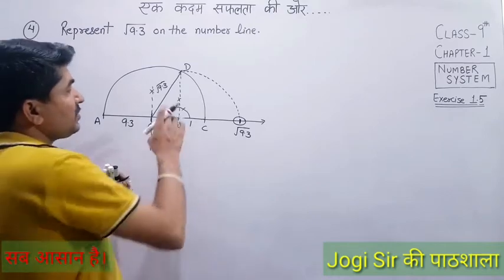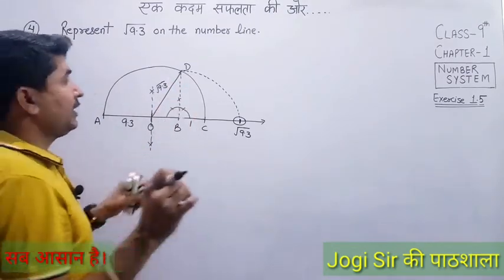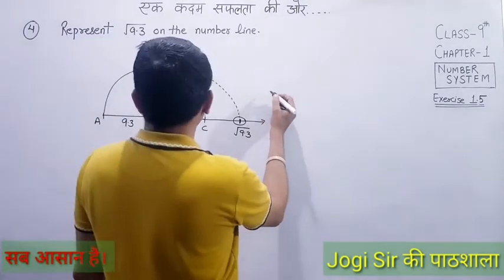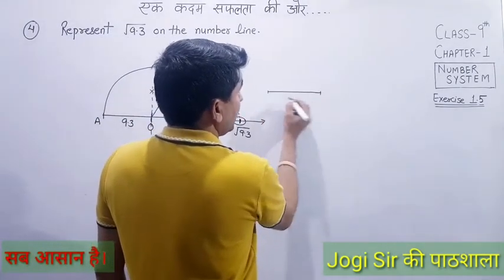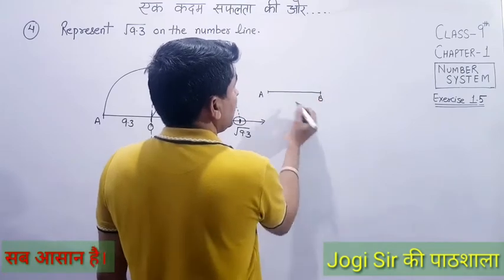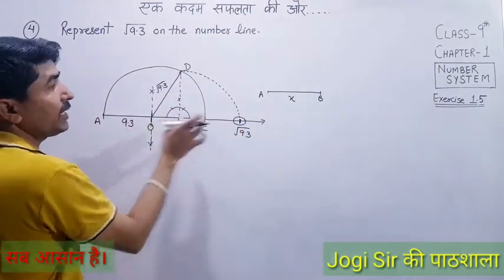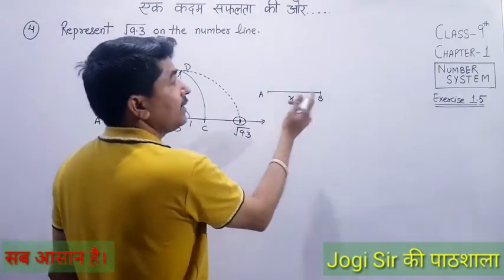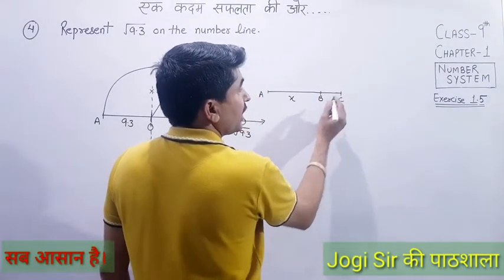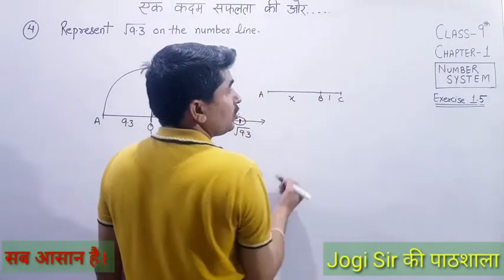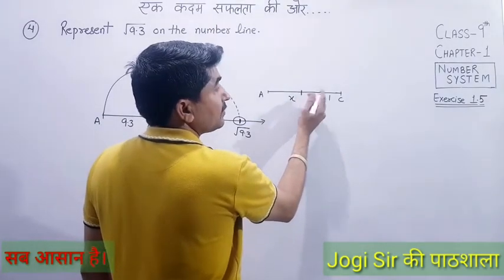Many students wonder how this construction works, so let's explain it. Let AB = x — here I've taken x = 9.3. BC = 1 unit. So AC = x + 1. The midpoint O of AC means OA = OC = (x+1)/2, which is the radius of the semicircle.